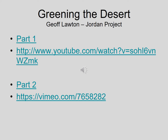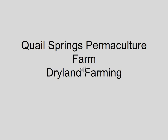A recommended resource is the two-part video series 'Greening the Desert,' a permaculture project in Jordan — a very flat area with very little rain — where simple techniques in a short period of time built soil and returned vegetation to the site. Jeff Lawton, who certified me as a permaculture designer, led that project. Quail Springs Permaculture Farm, about an hour north of Ojai in the high desert, is another great example of dryland permaculture farming.